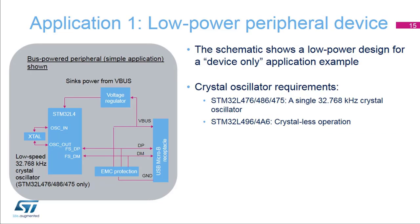Here is an application example of a low-power device. Power is drawn directly from the USB VBUS signal. A single low-speed crystal oscillator at 32.768 kilohertz is needed outside. A scheme is implemented inside the microcontroller using this low-speed crystal oscillator to trim the internal 48 megahertz oscillator, thus giving the required frequency accuracy to comply with the USB specification.